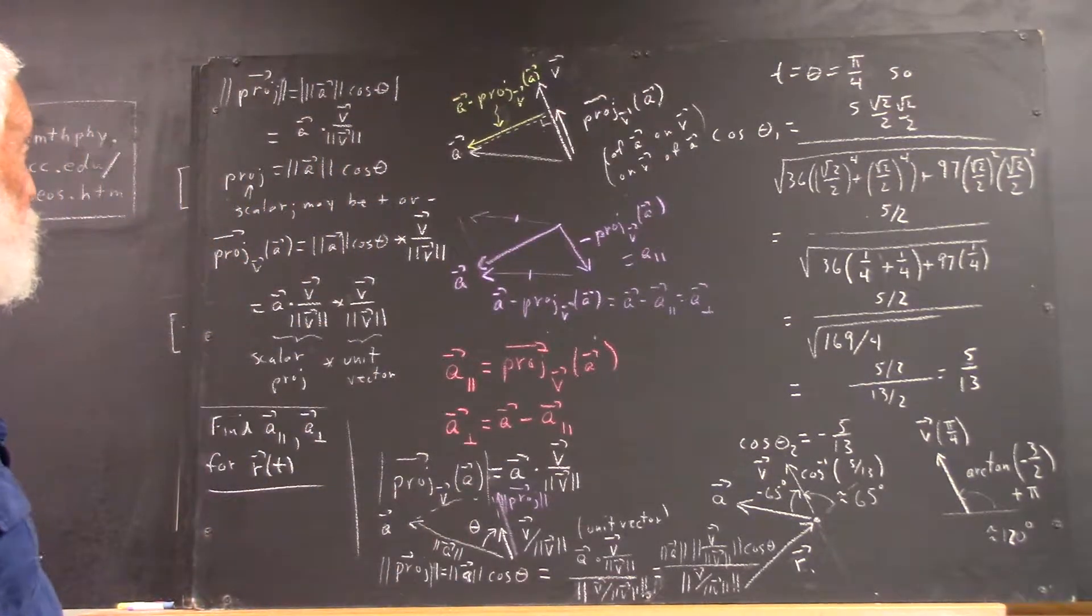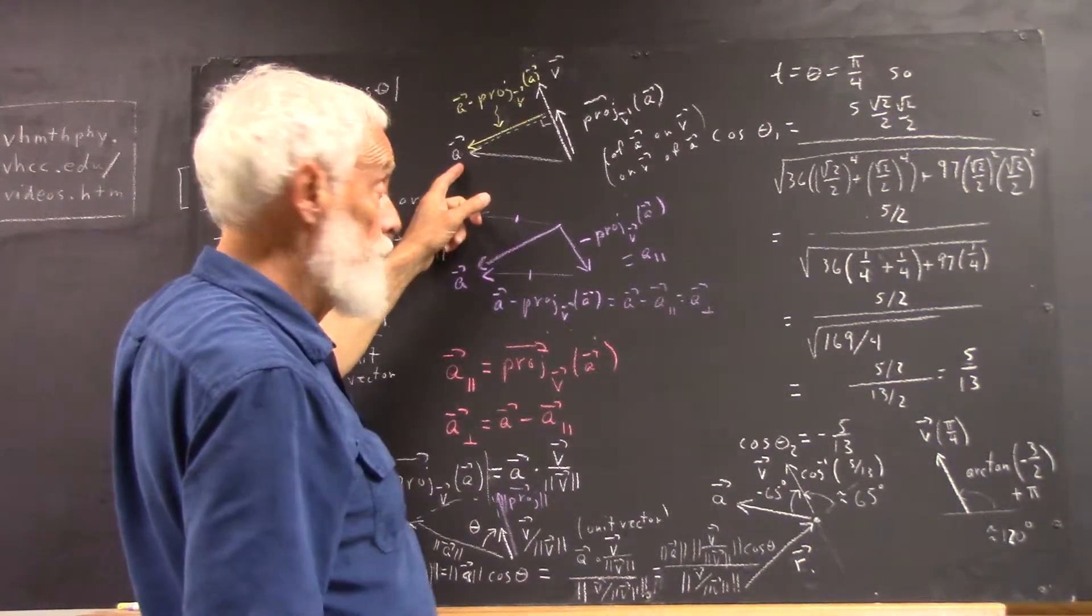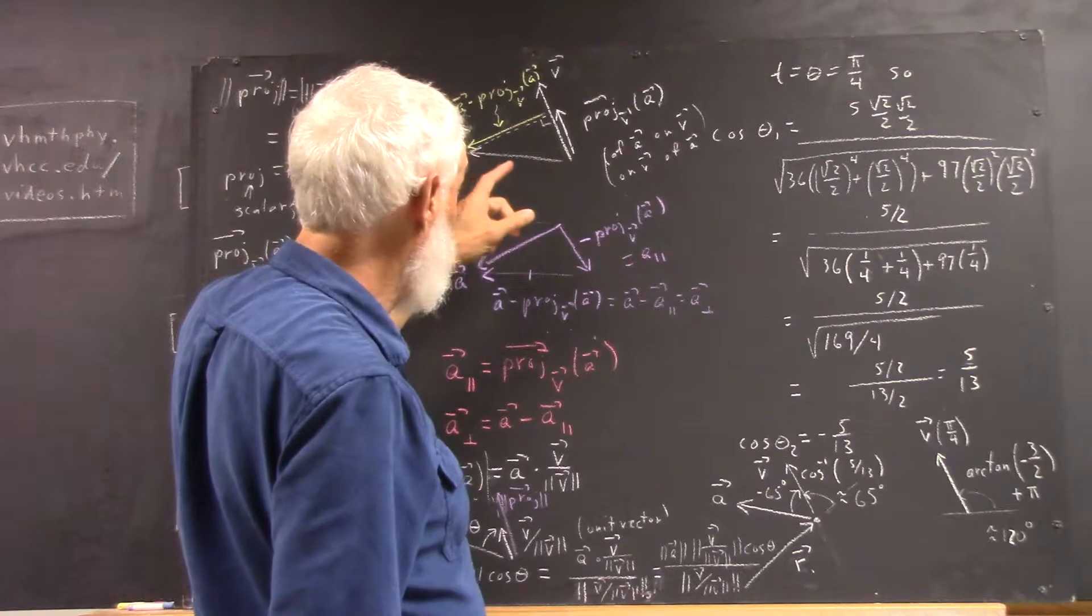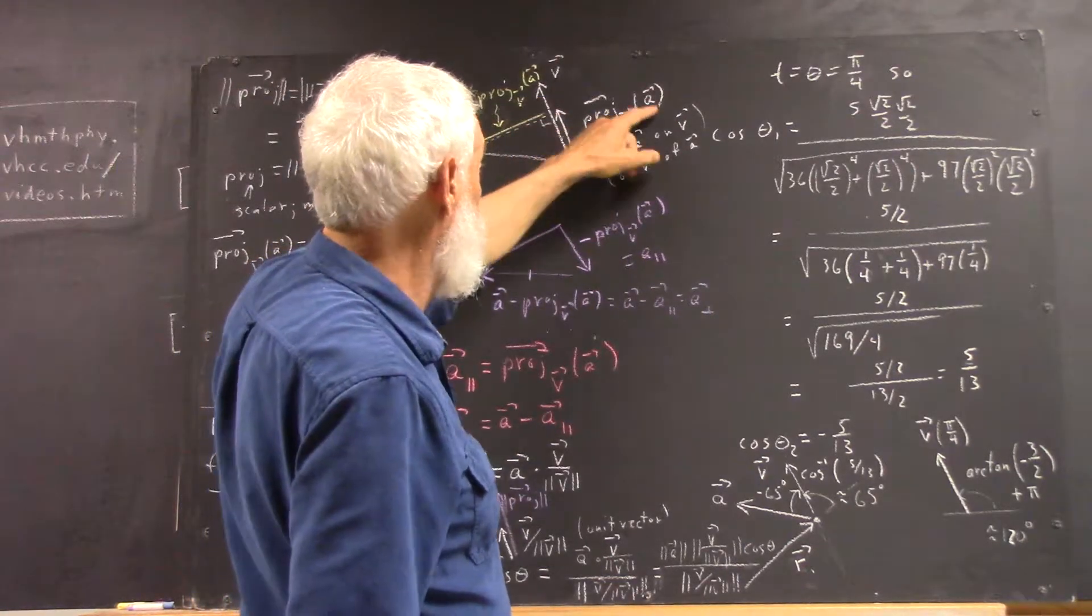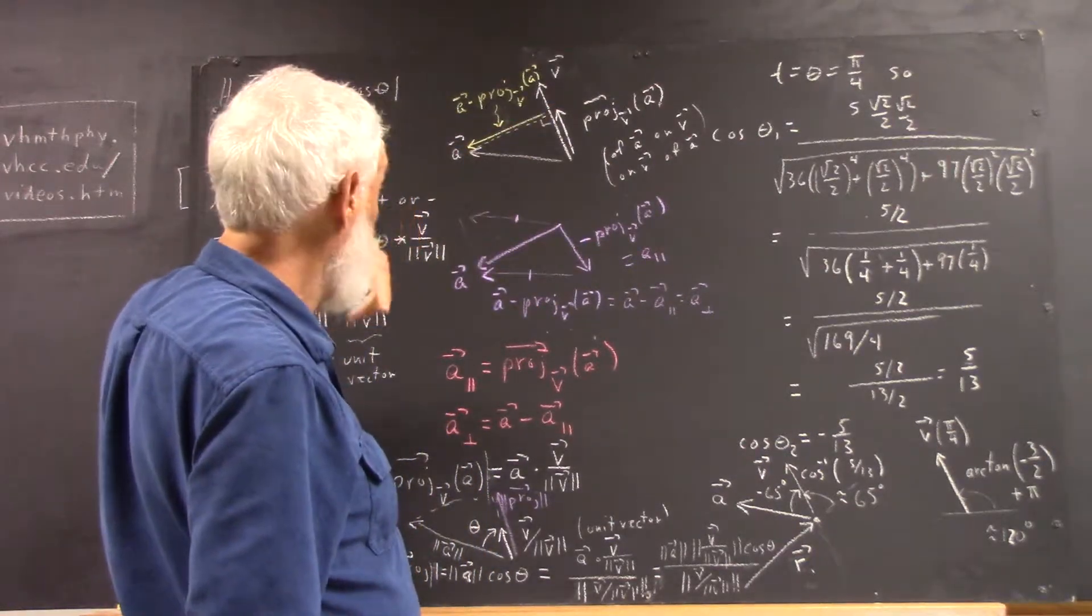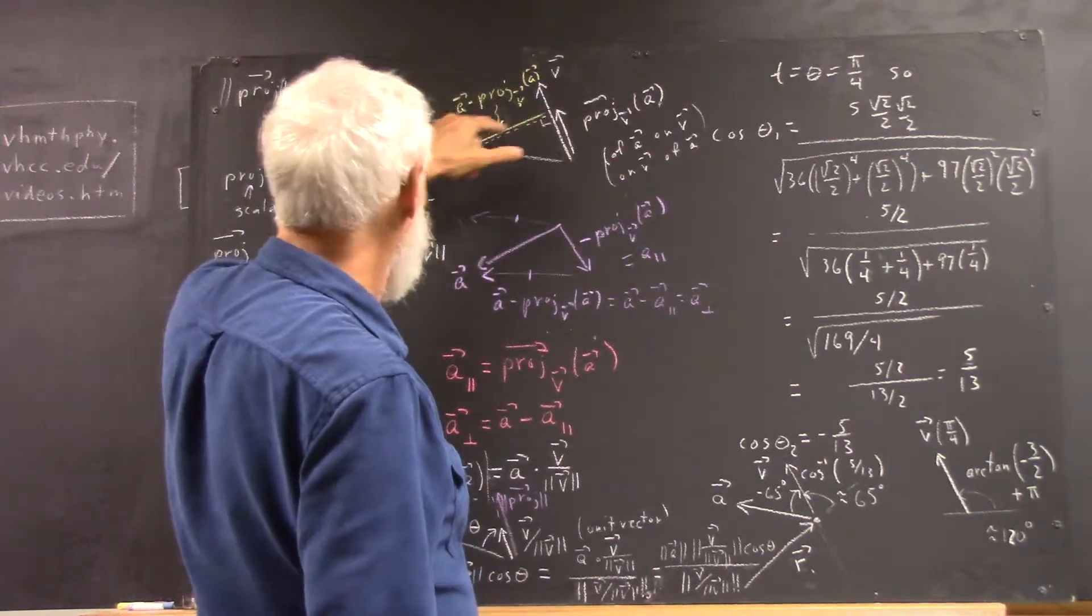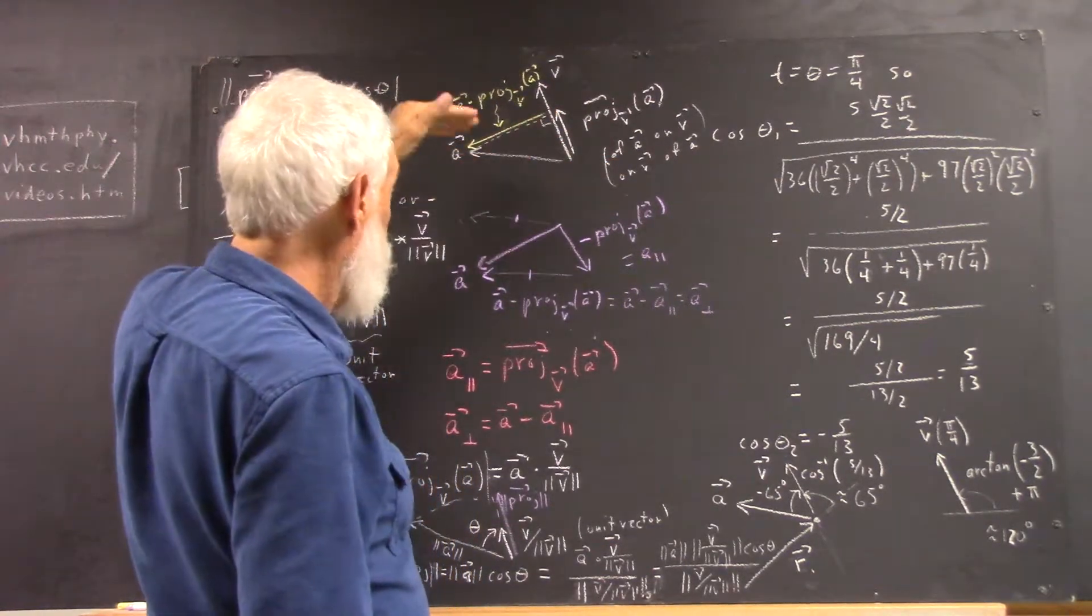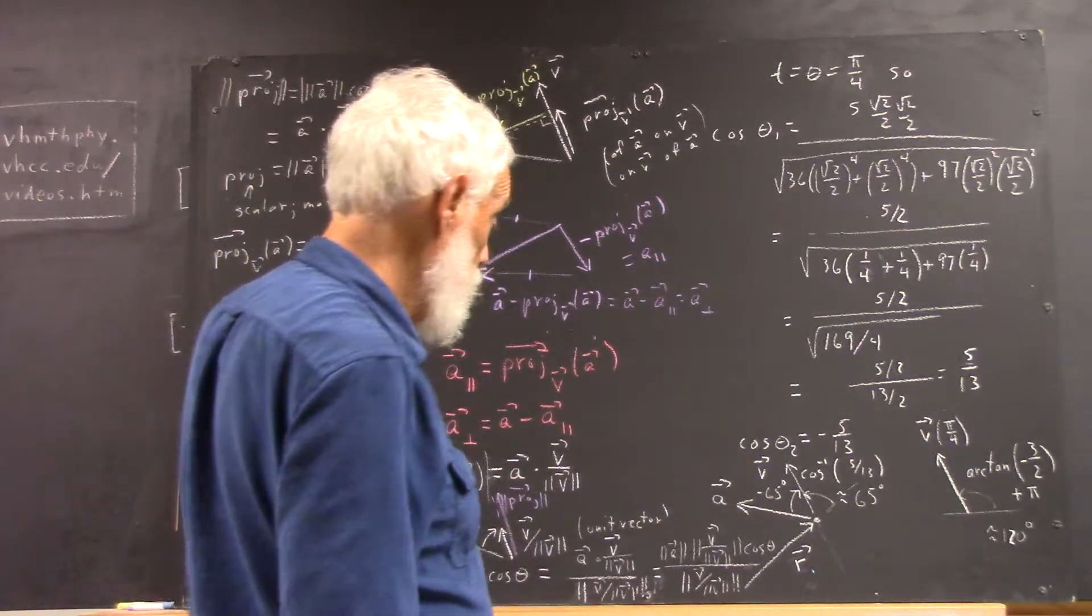So, again, the two components of the projection vector, of the A acceleration vector, the component parallel to the velocity is the projection of A on V. The component perpendicular to the velocity, the one that changes your direction, this is the one that speeds you up or slows you down. This changes your direction.